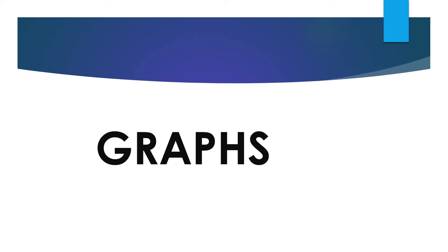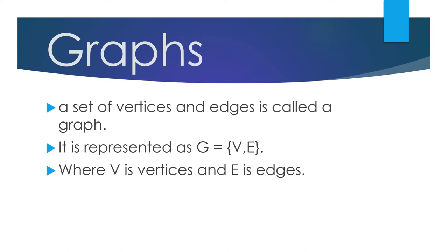Hello everyone. In this video I am going to explain about graphs. A set of vertices and edges is known as a graph, and it is represented as G = (V, E), where V is vertices and E is edges.